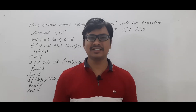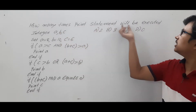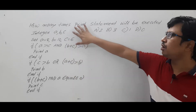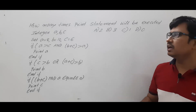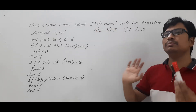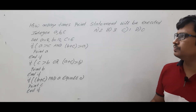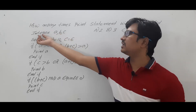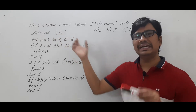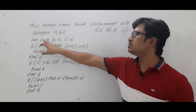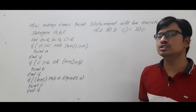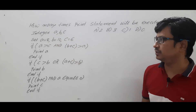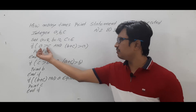First let me read out the question, then I will discuss the solution. How many times will the print statement be executed? They have given a pseudo code — if you execute the pseudo code, how many times will the print statement be executed? They have declared three integer variables A, B, C and assigned the values A=8, B=10, C=6 respectively.